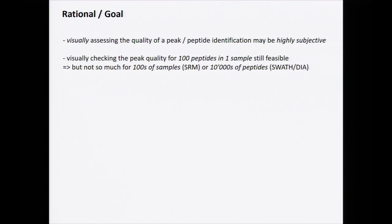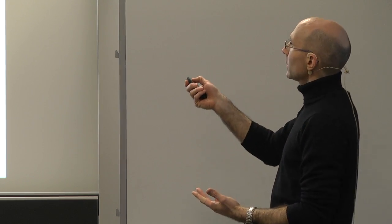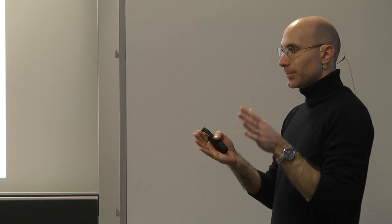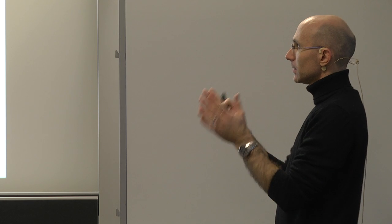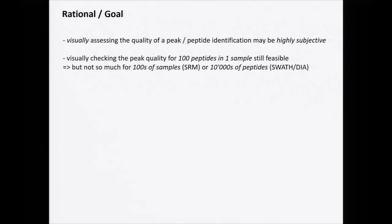The reason you want to do this automatically is that visually assessing the quality of a peak for a peptide identification can be highly subjective. Some people will trust a peak; some people won't — they say it's not exactly coeluting, and so on. You need a truly objective manner to assess the identification of your peptides.